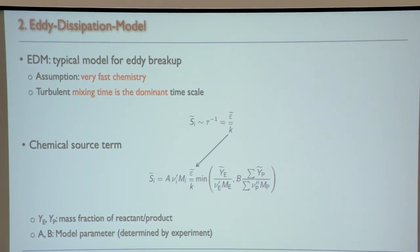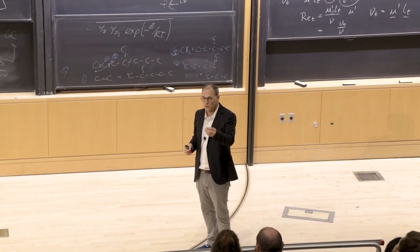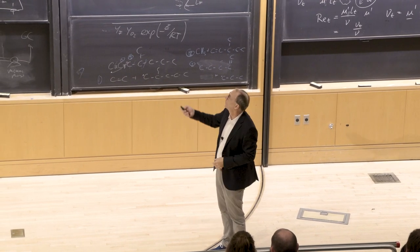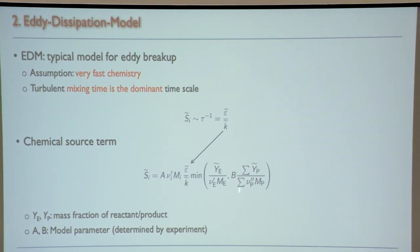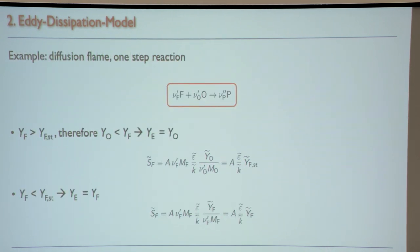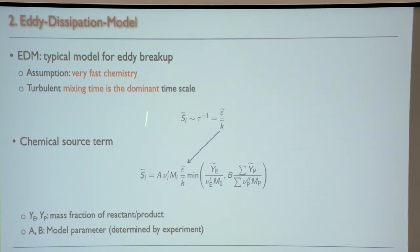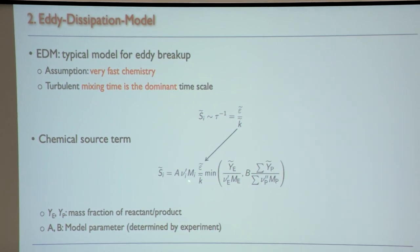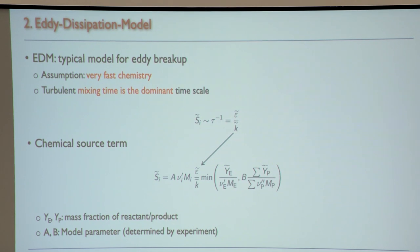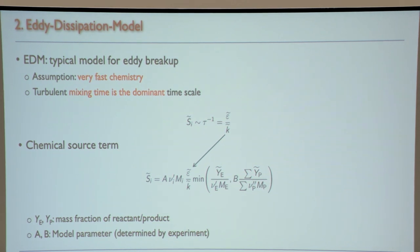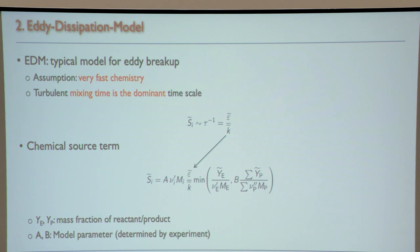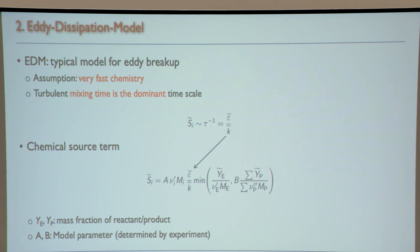After auto-ignition, locally some product exists, making the term non-zero, but it's governed by how much fuel and oxygen are available. The model has two parameters, A and B, which need to be adjusted to experiments. If you have two parameters it's a bit more complicated to tune, but once fitted it works. Because it's one-step global chemistry, it doesn't account for intermediates.